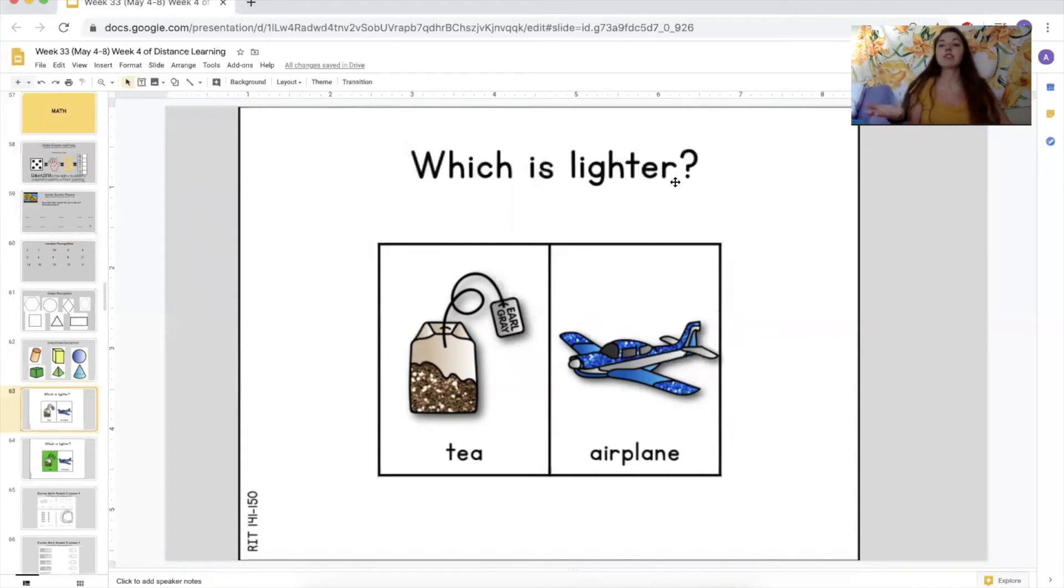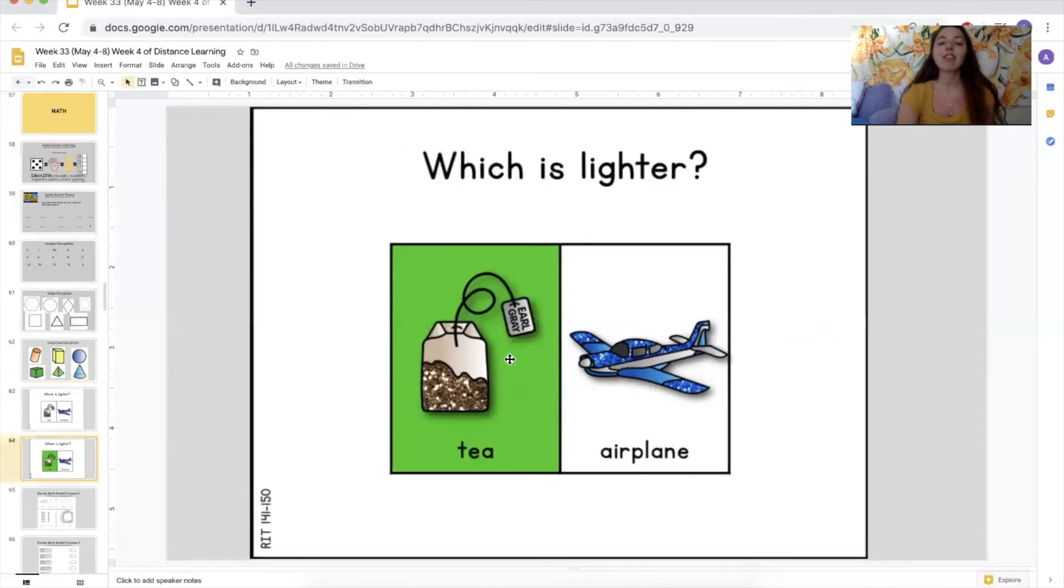Things that are harder to lift, those are heavier. And things that are easy to lift, like this little binder clip, those are lighter. So this is asking us which one is lighter, between a teabag and an airplane. Which one do you think is lighter? Which one goes up to the sky and which one is easier to lift?